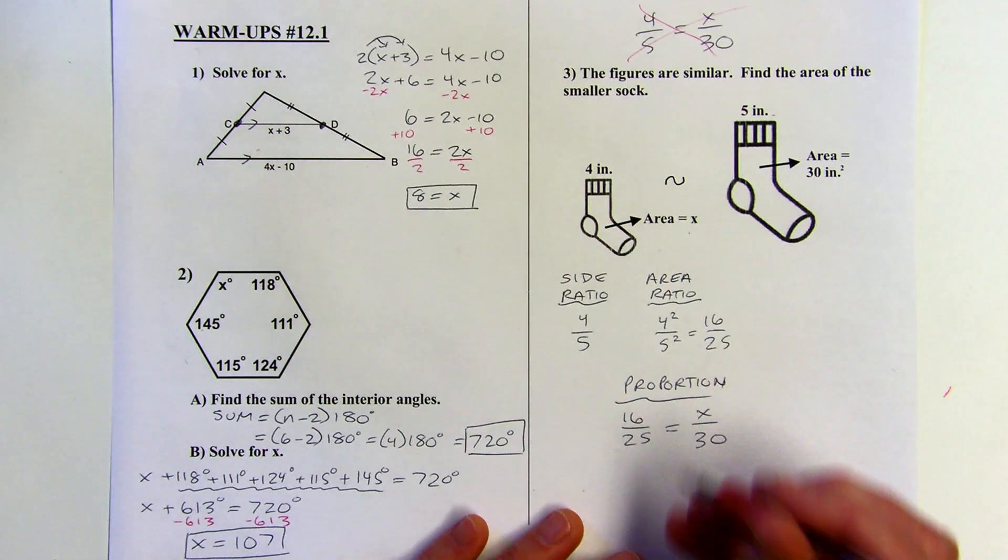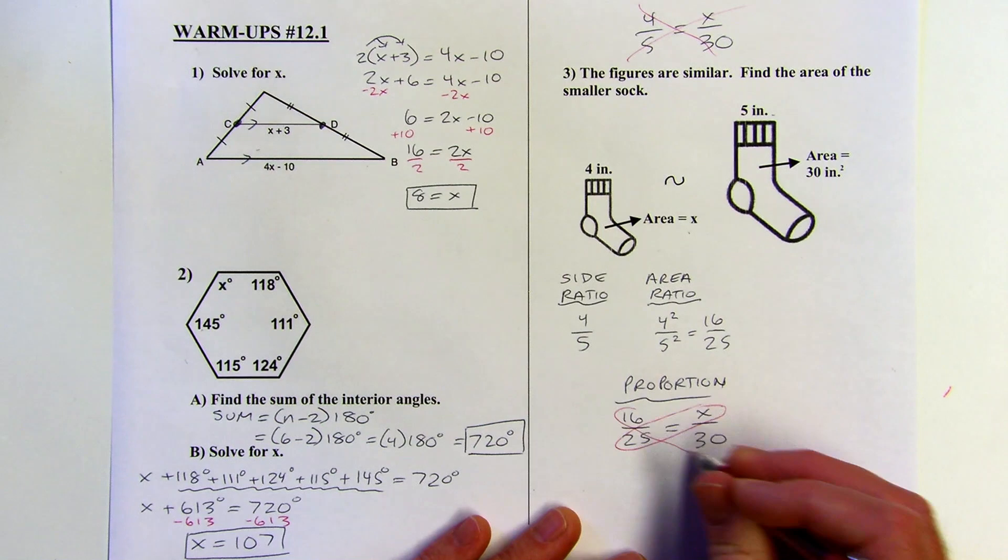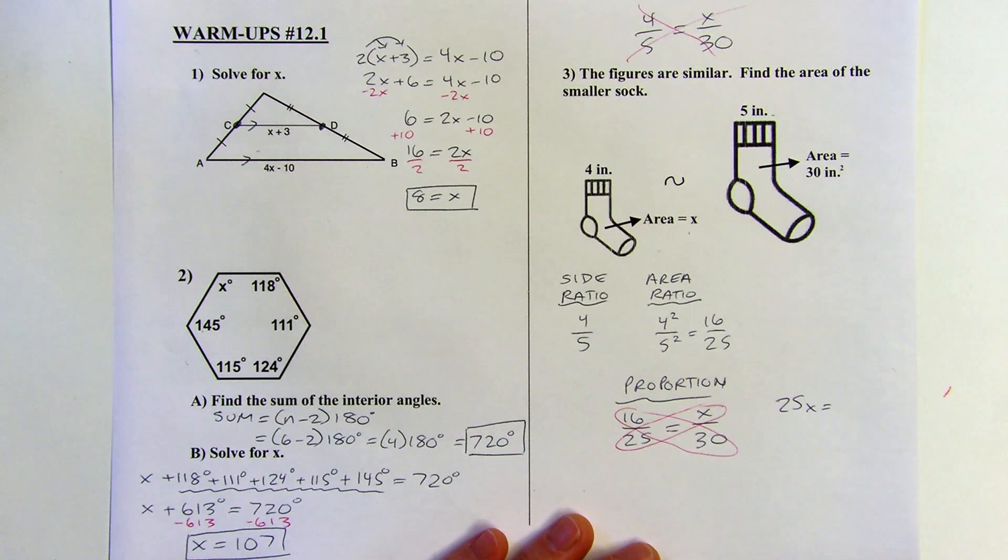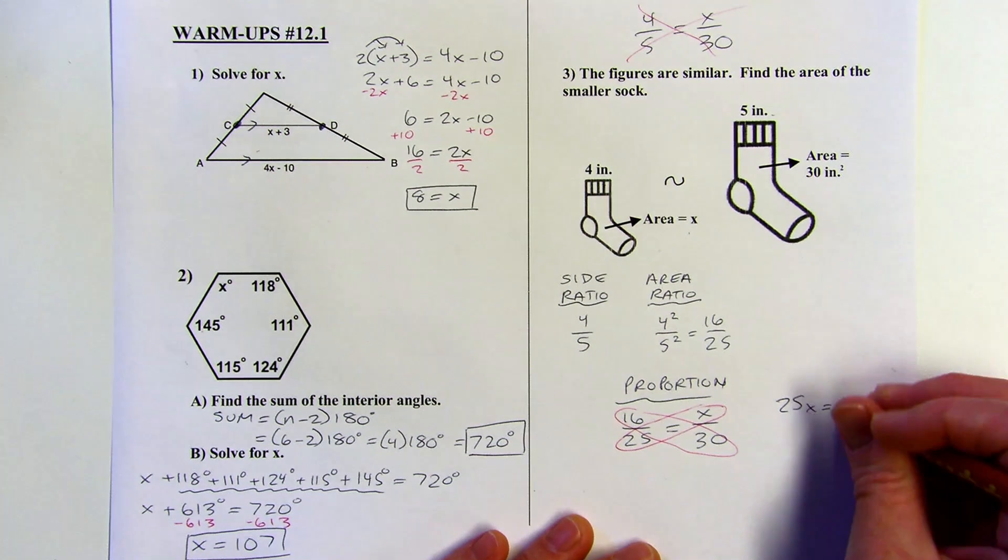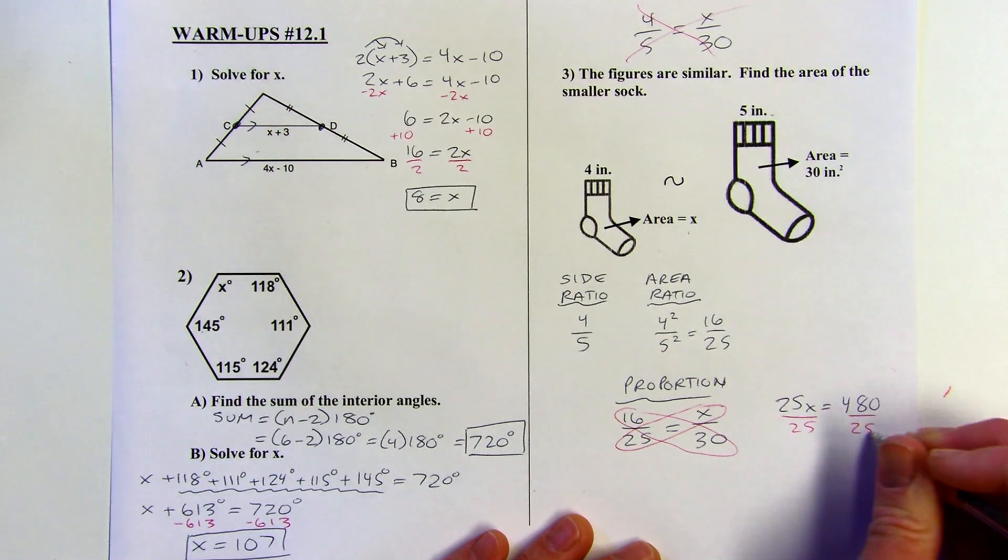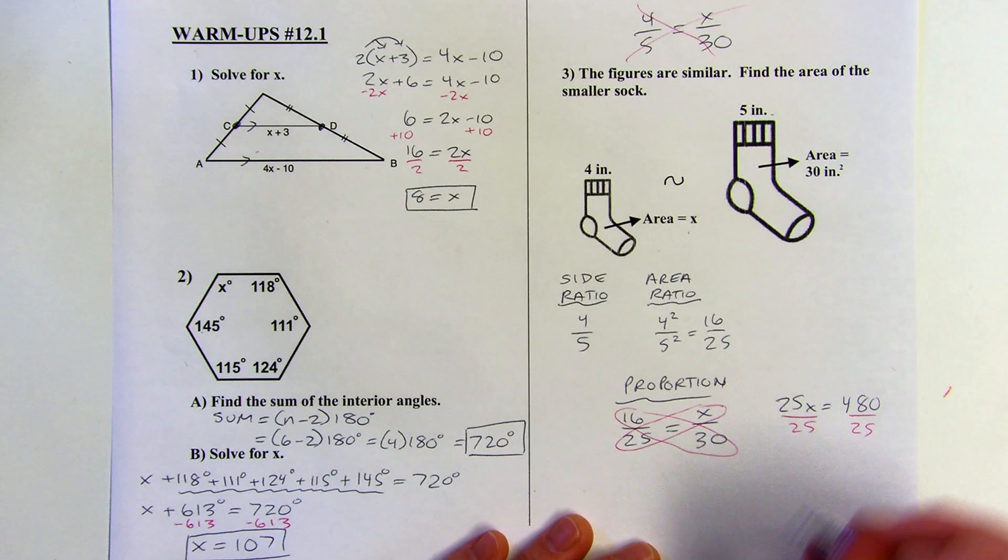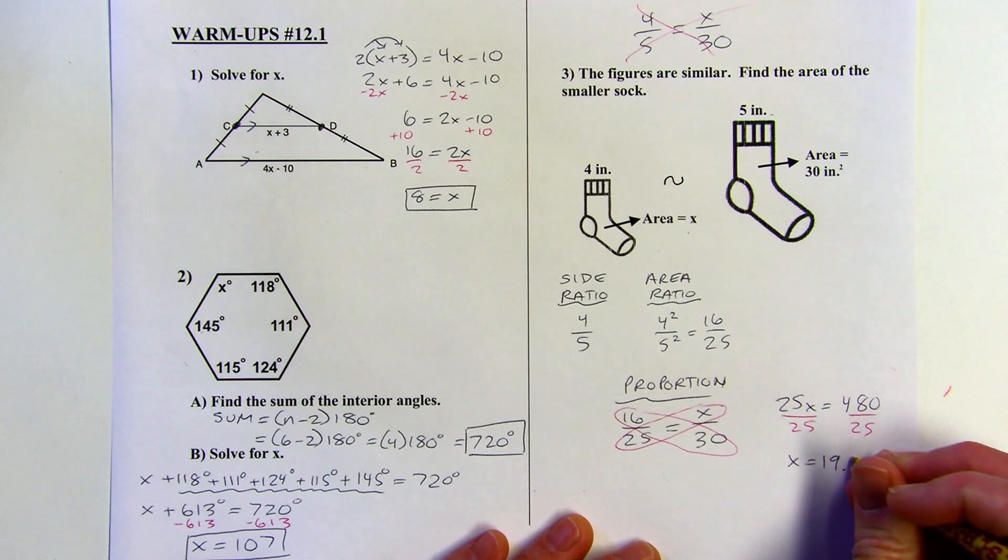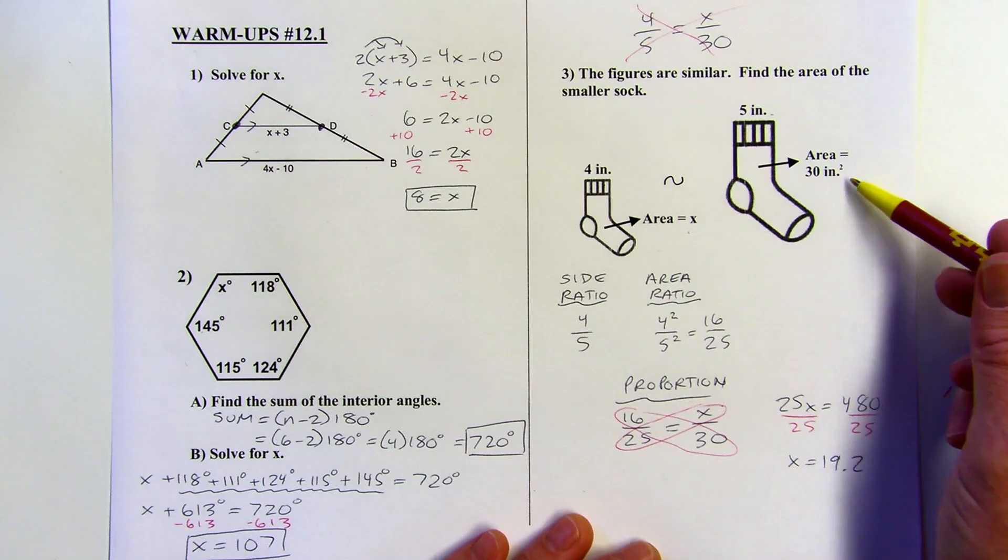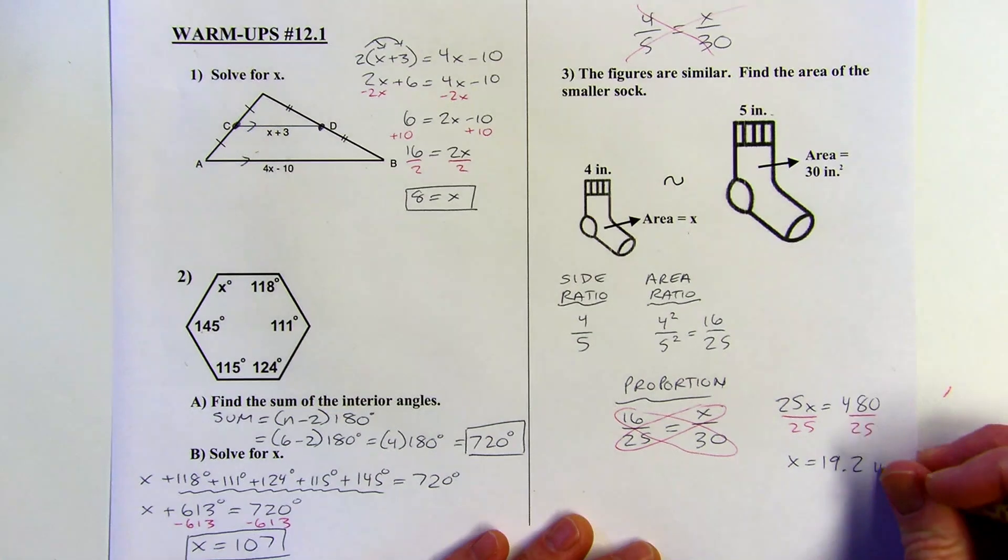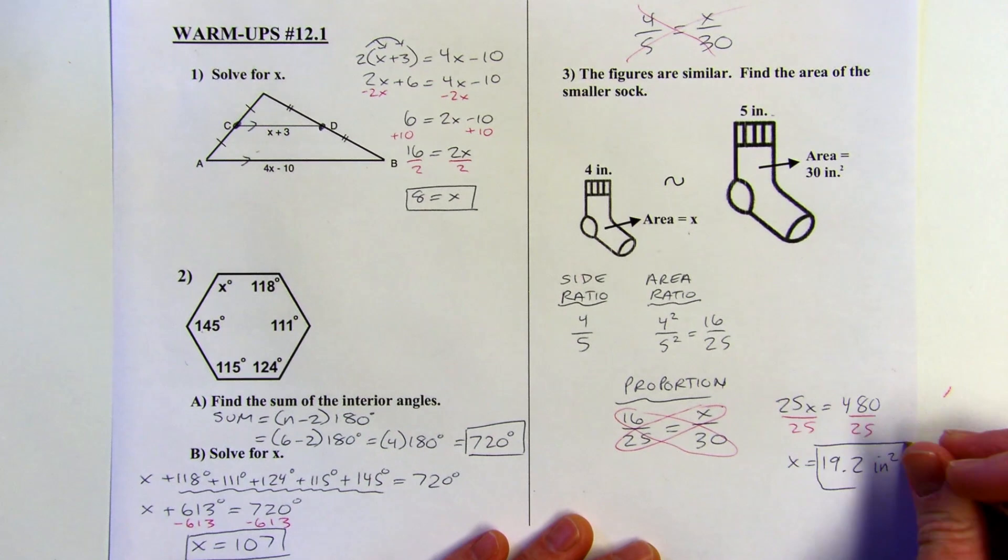And then from there, I'm going to cross multiply to solve for X. So 25X is going to equal 16 times 30. Let's see. 16 times 30 is 480. And then divide by 25. And this is going to come out to 19.2. And this is the area of the smaller sock. So it should have the same units as the area of the bigger sock. So that means I've got square inches here.